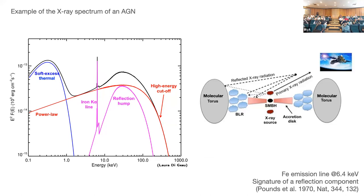AGNs are also the brightest X-ray sources. Most X-ray satellites or missions in the past concentrated most of the time studying AGNs. This is a typical X-ray spectrum from an AGN. On the X-axis we use energy — in particular, kilo-electronvolts. The Y-axis is a measure of energy or number of photons. These people already know there are several components in the X-ray spectrum from an AGN.